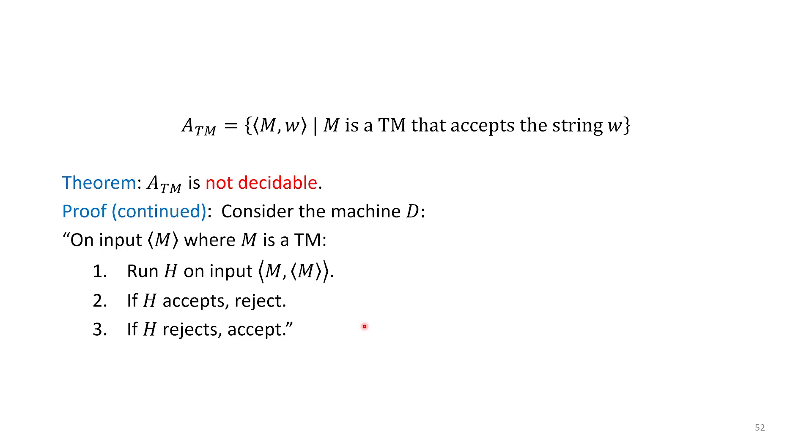Now we're going to create a very special machine, D for diagonalization. It's also a very weird machine. It has to diagonalize against this list of machines. This machine D takes as input a Turing machine. What it does is it runs that Turing machine on an encoding of itself. The input it gives to that Turing machine is the encoding of that Turing machine.